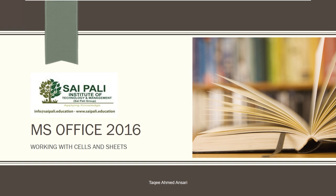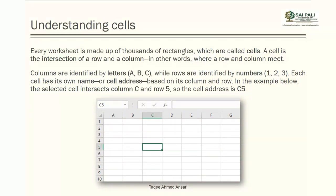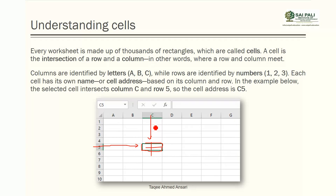Hello friends, today in this video we will see working with cells and sheets of Microsoft Excel. First you have to understand what is a cell. Every worksheet is made up of thousands of rectangles which are called cells. A cell is an intersection of rows and columns. Where the row and column meets, that is what a cell.